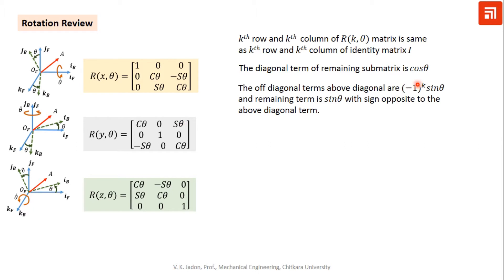For k=3, the sine of the off-diagonal terms: the above-diagonal term is given by minus(-1)^k, so for the y-axis rotation the sine is negative. The above-diagonal term is +sin(theta) and the other term will be the opposite sign. This is basically how we can remember these rotation matrices.